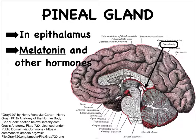Let's get started by going through the individual major endocrine glands to learn which hormones they produce and what the effects of those hormones are. We'll bypass the hypothalamus for now and get to it when we cover the pituitary, since they work together.